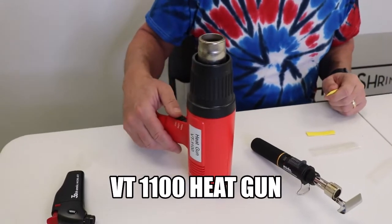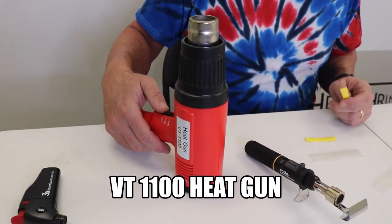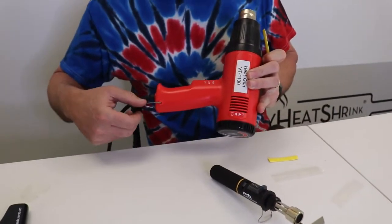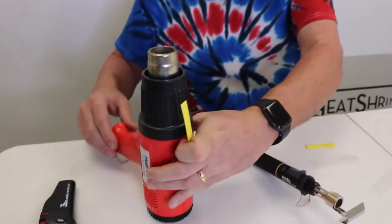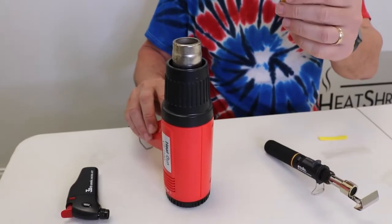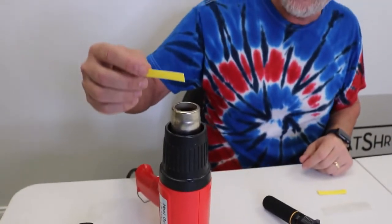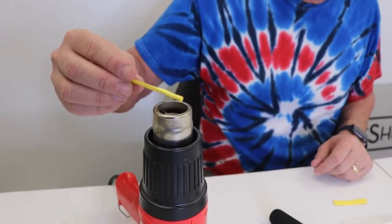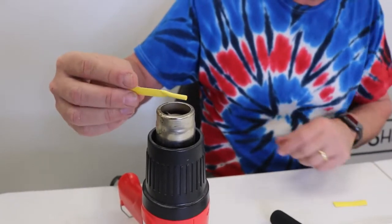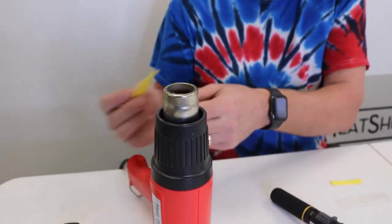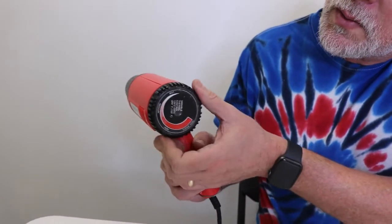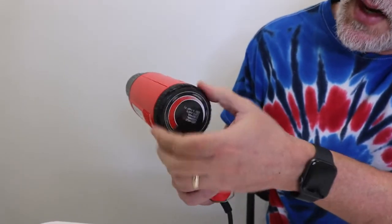This is our basic heat gun, the VT 1100 heat gun. Gets up to 1100 degrees. The thing I like about this one is it's got a little stand here so you can use two hands. Turn it on, it's adjustable so it's at the highest temperature. This is the temperature dial on here, it turns to go to low temperature and high temperature.